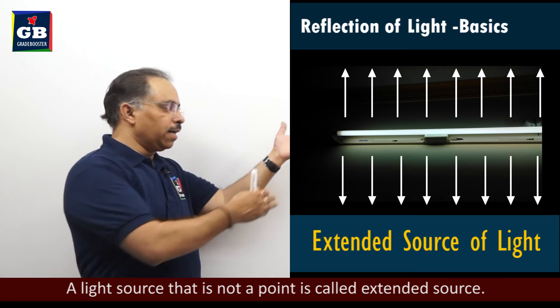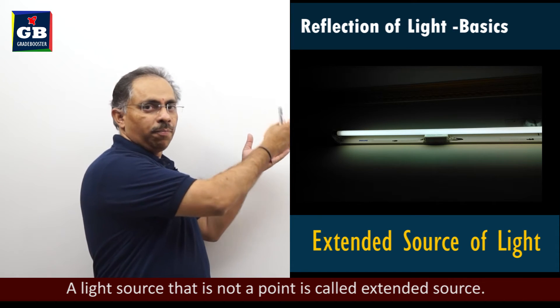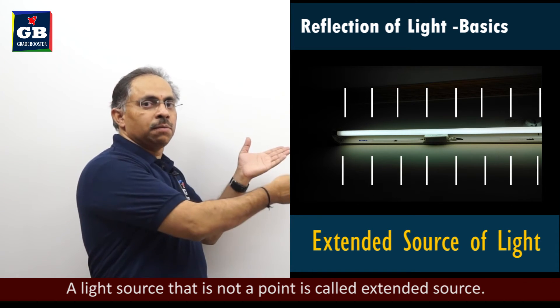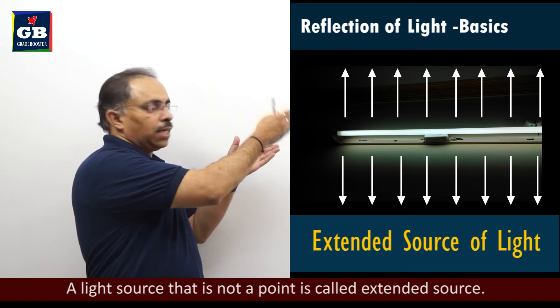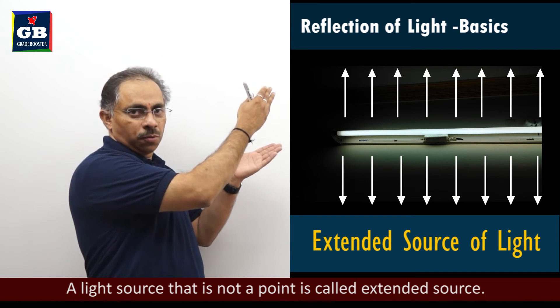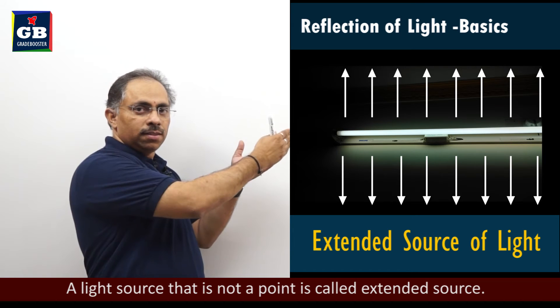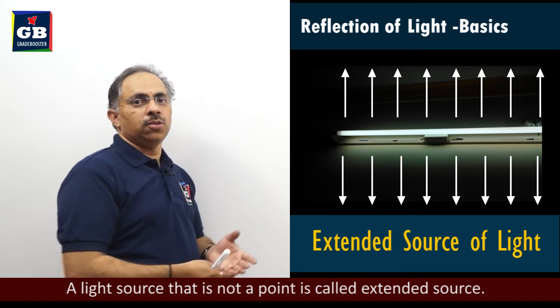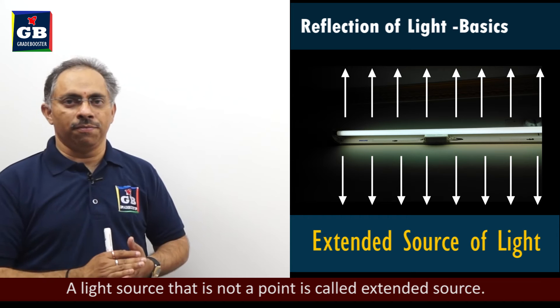You can see there are different rays which are coming from towards the bottom of the tube light and towards the upwards of the tube light also. So all these rays are what? Parallel rays. They are coming parallel. So this is what you call parallel beam of light.